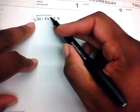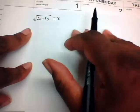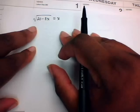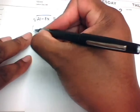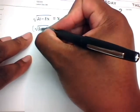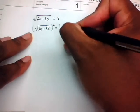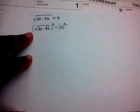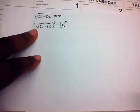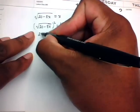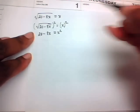Here's an example: solve √(20 − 8x) = x. The radical is already isolated, so we square both sides to eliminate it. Squaring the left side gives 20 − 8x, and squaring the right side gives x². So we have 20 − 8x = x².